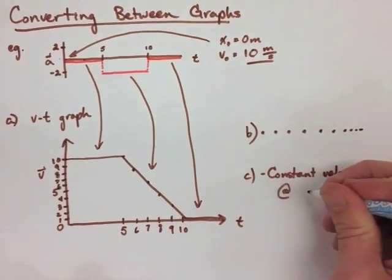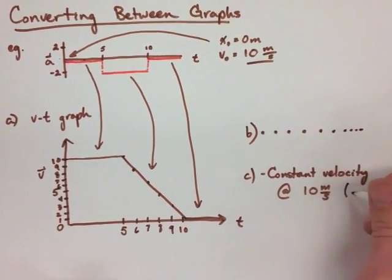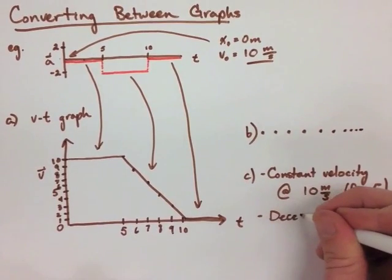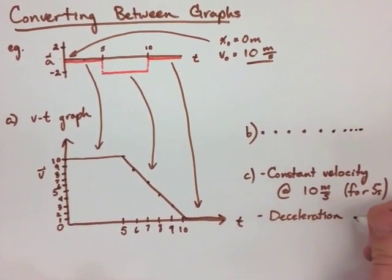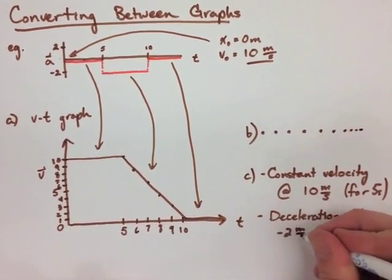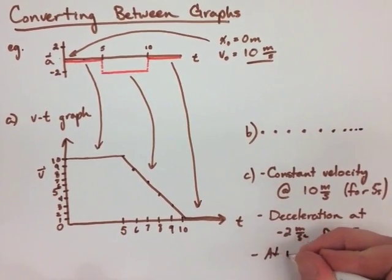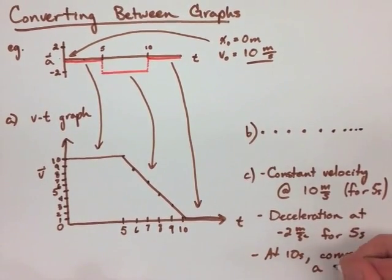for the first five seconds, we have constant velocity of 10 meters per second. At the moment five seconds comes, we have a deceleration of two meters per second squared for the next five seconds. This causes us to be traveling at zero meters per second, and at ten seconds, we come to a stop.